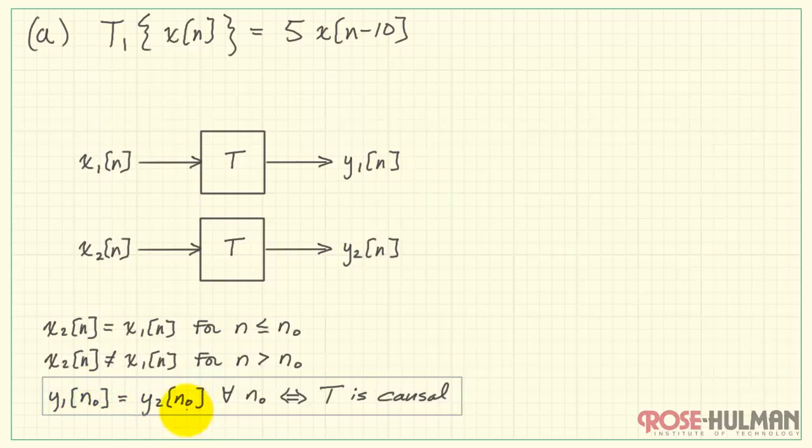We're looking to see whether or not y1 and y2 at n0 are, in fact, the same. So we need to evaluate both y1 and y2 at n equals n0. The result of the first input and the second input look like this, and I'm evaluating this at n equals n0.